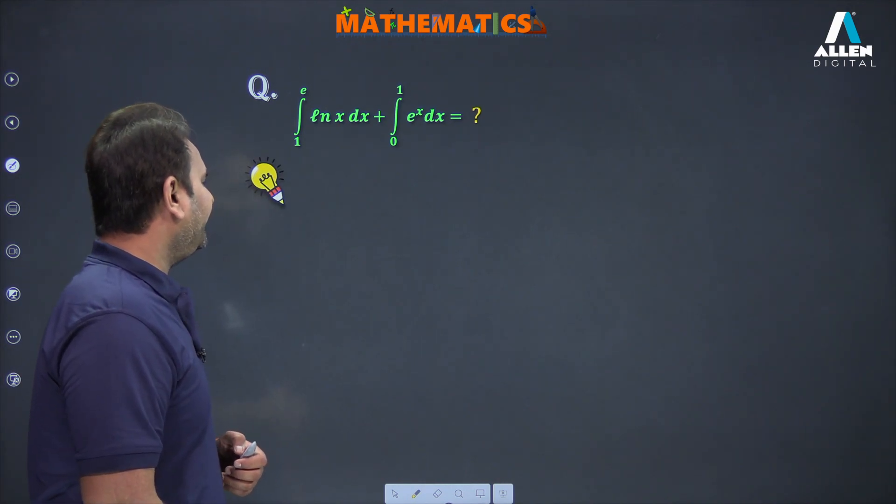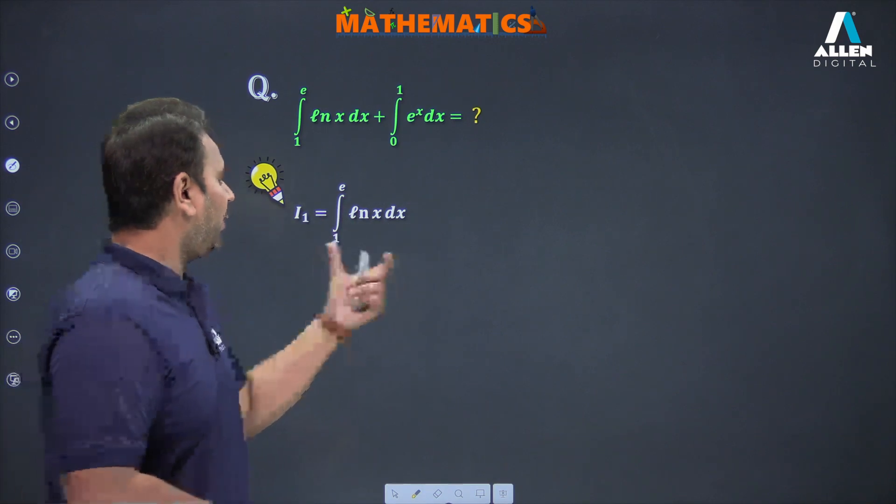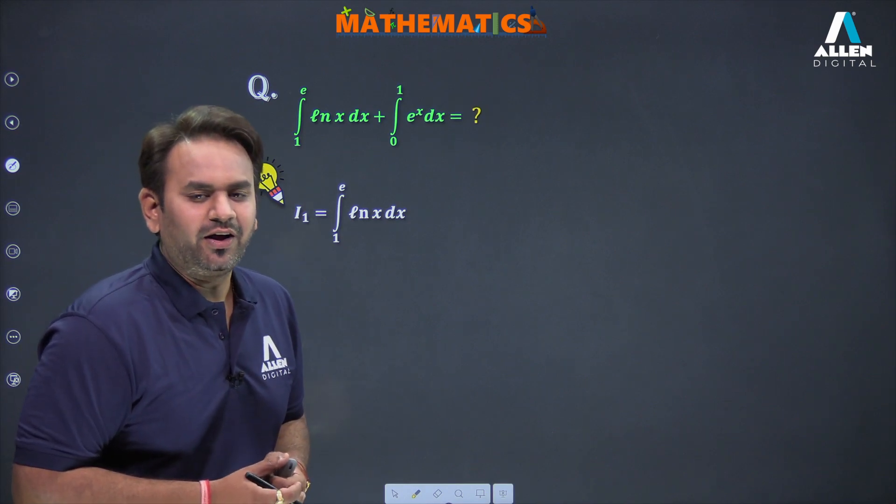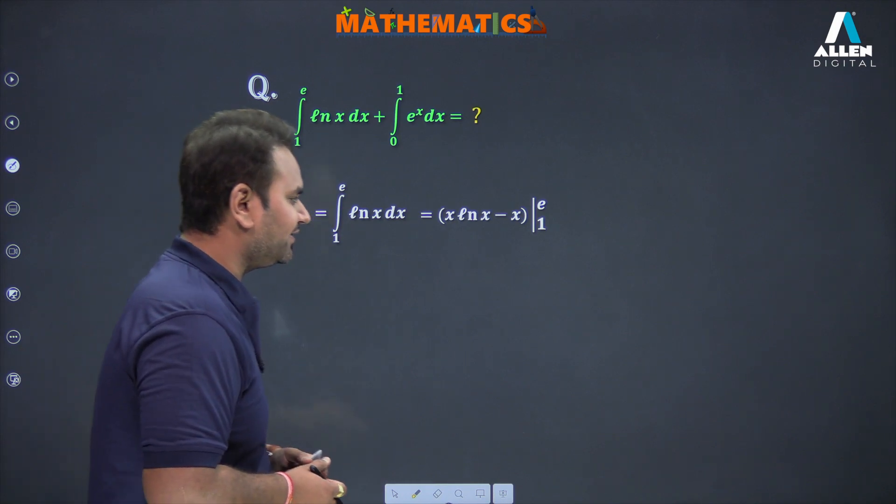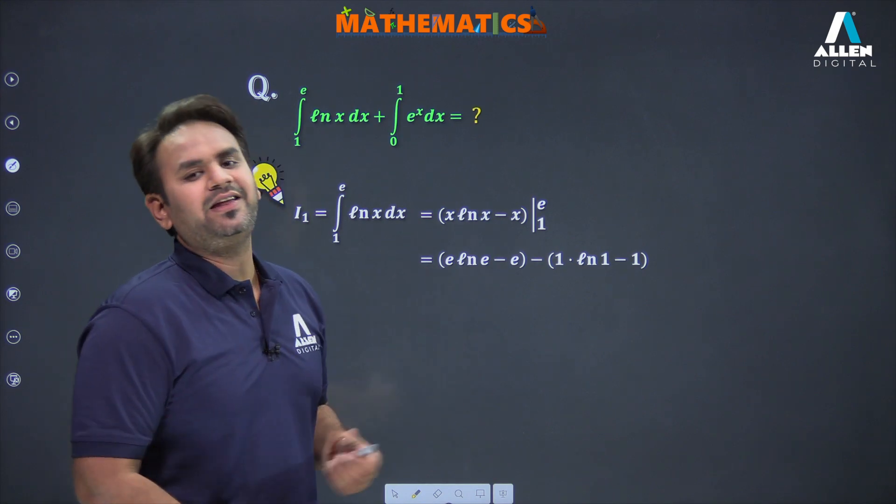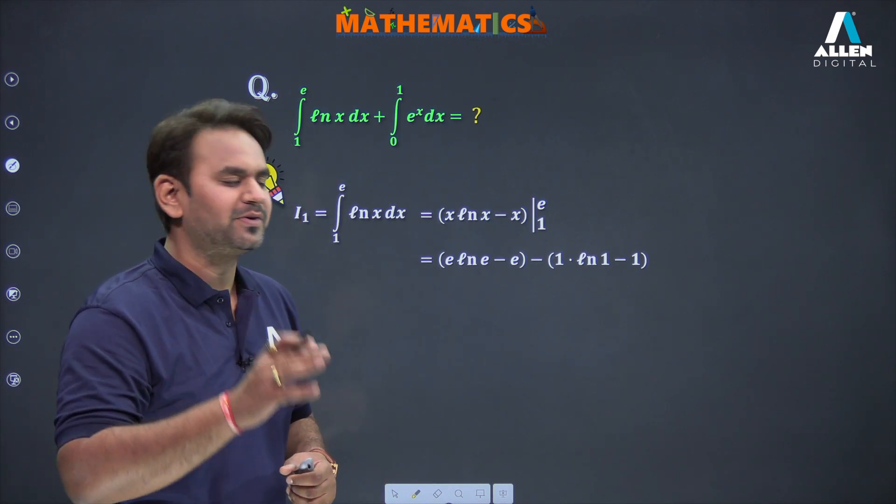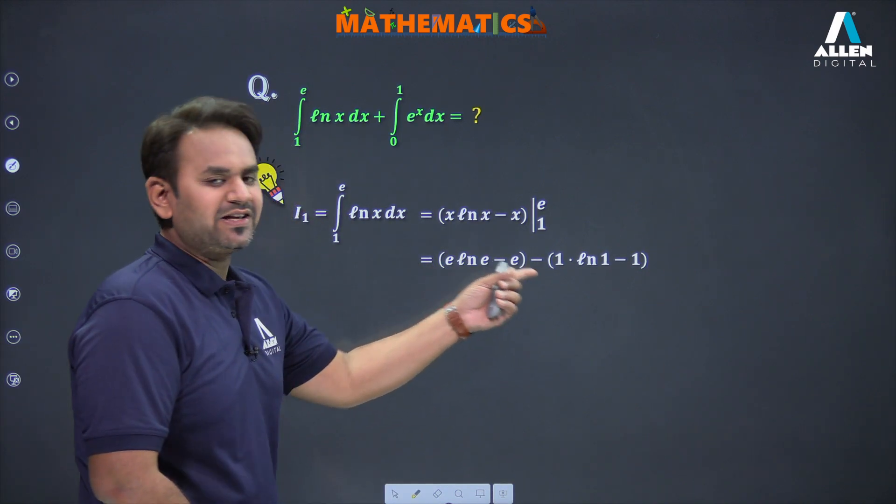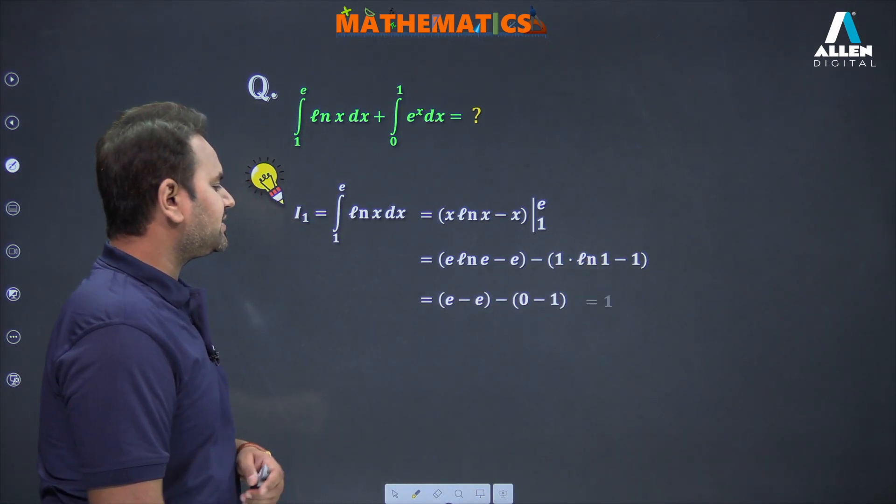To solve this question, we treat both integrations separately as I₁ and I₂. For I₁, the integration of ln x is x ln x minus x. Integrating from 1 to e, if we put the upper limit, this will be e ln e minus e, minus the lower limit gives 1 times ln 1 minus 1. Now e ln e minus 1: ln e equals 1, so e minus e becomes zero, and this becomes zero since ln 1 is zero. So the answer is 1.